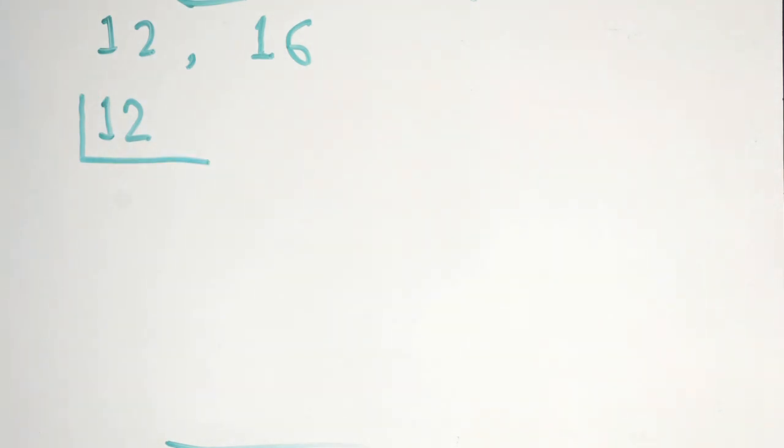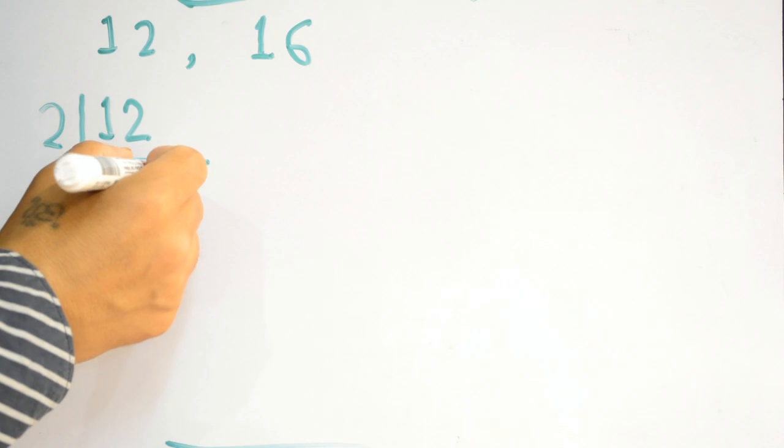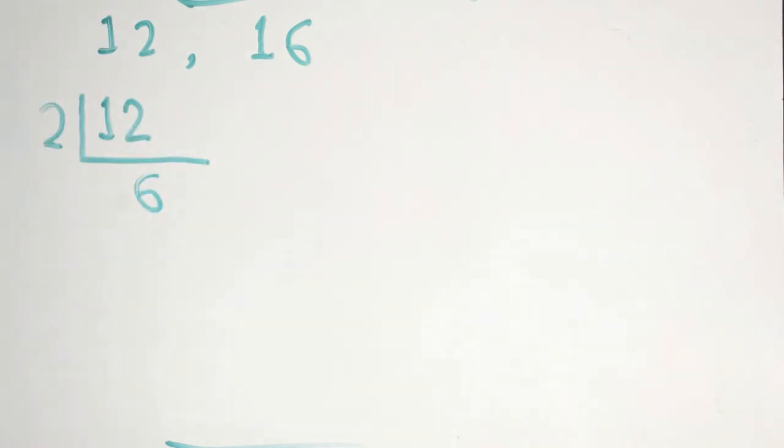Divide this 12 exactly with any number. We always start from the smallest prime number, which is 2. So 2 times 6 is 12. You can divide 6 exactly by 2 as well. 2 times 3. So now we have all prime factors.